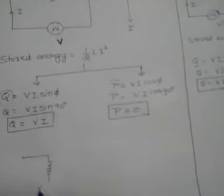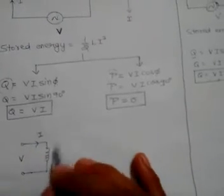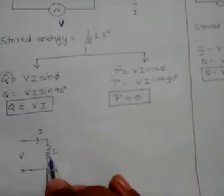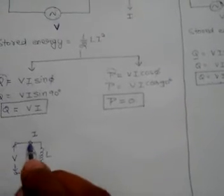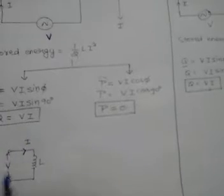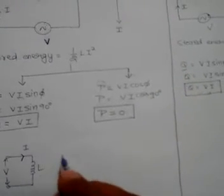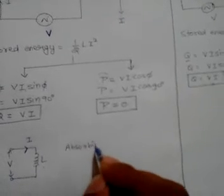Now, suppose this inductor is connected across a voltage source V. If the current is flowing in this direction, the inductor is absorbing power — it is storing energy in its magnetic field. So we can say that this inductor is absorbing lagging vars, because in this case with the current in this direction, the inductor absorbs energy.